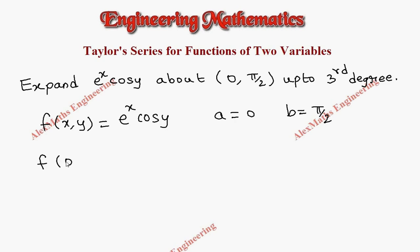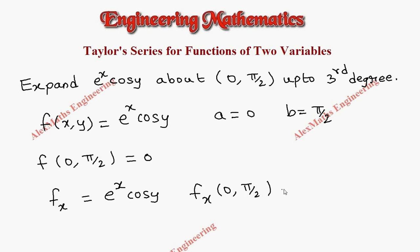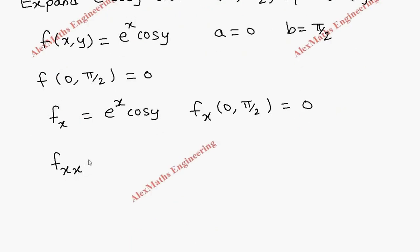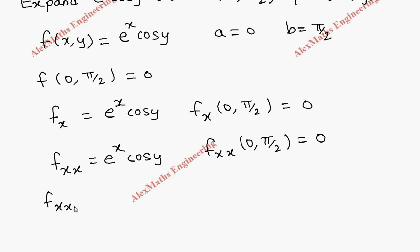Let's find f(0, π/2) — this value will be 0 because cos(π/2) is 0. Now let's find the first partial derivative with respect to x. e^x is e^x and cos y is constant, so we write it as is. f_x of (0, π/2) is 0 since cos(π/2) is 0. Similarly, f_xx is e^x·cos y and f_xx(0, π/2) is 0. Likewise, f_xxx is e^x·cos y and f_xxx(0, π/2) is 0.